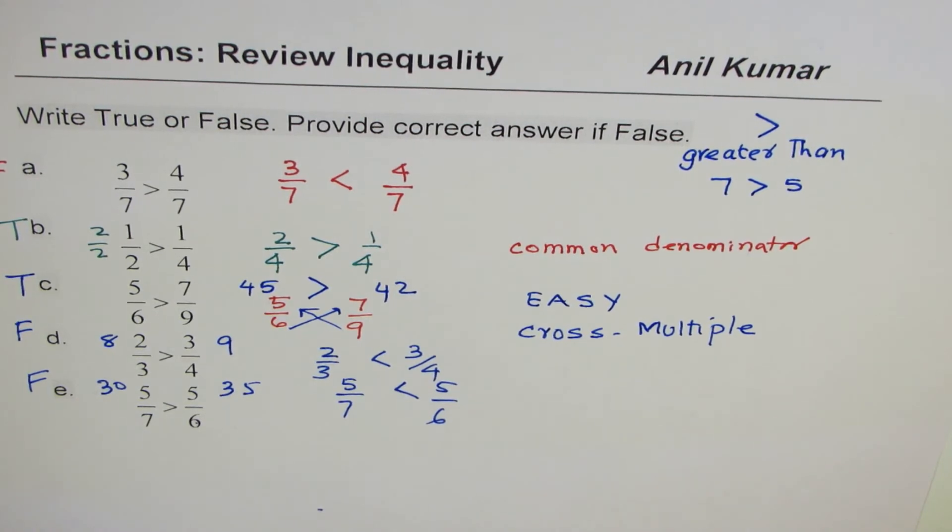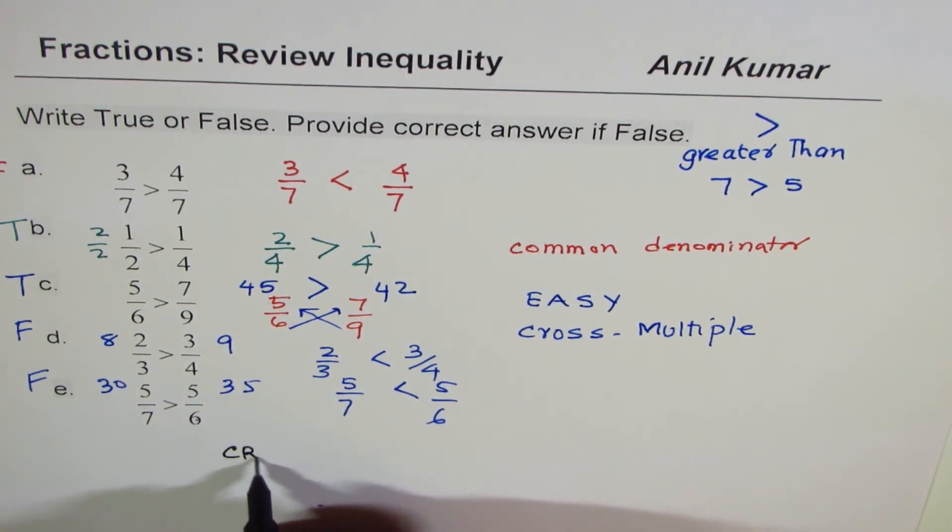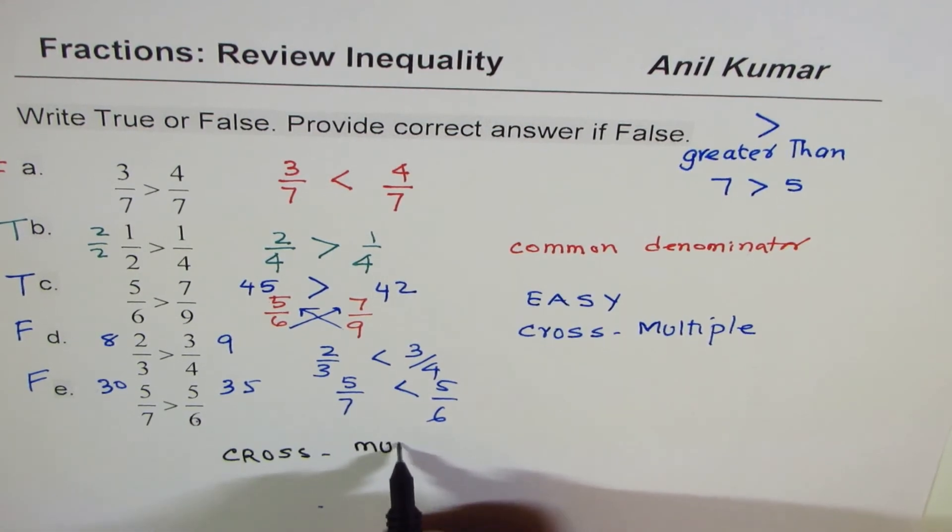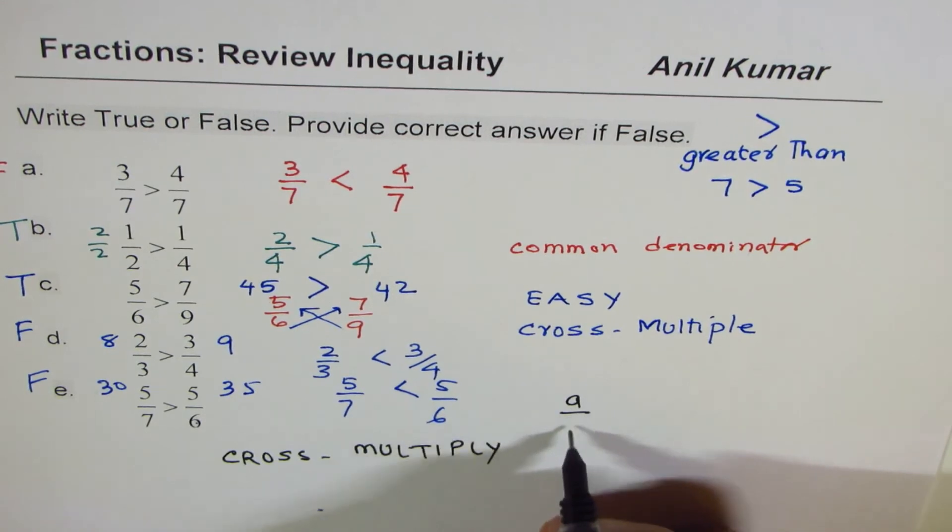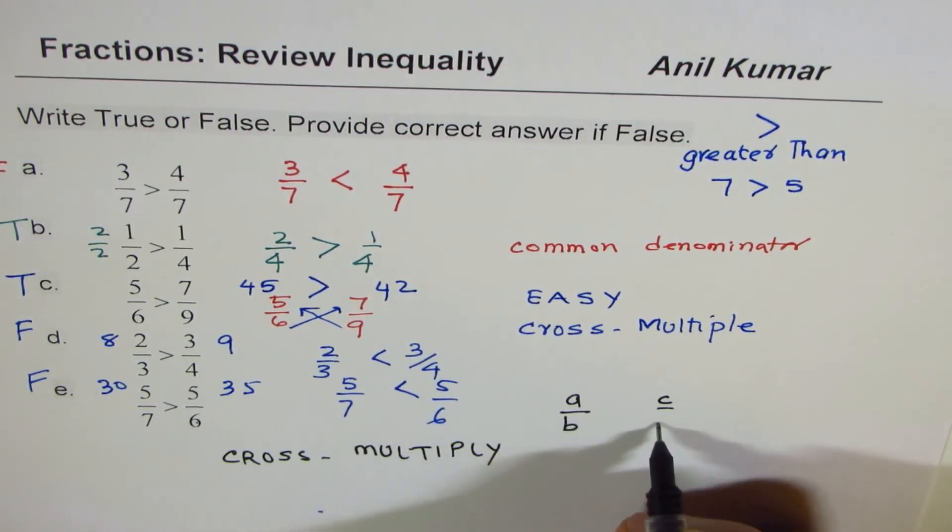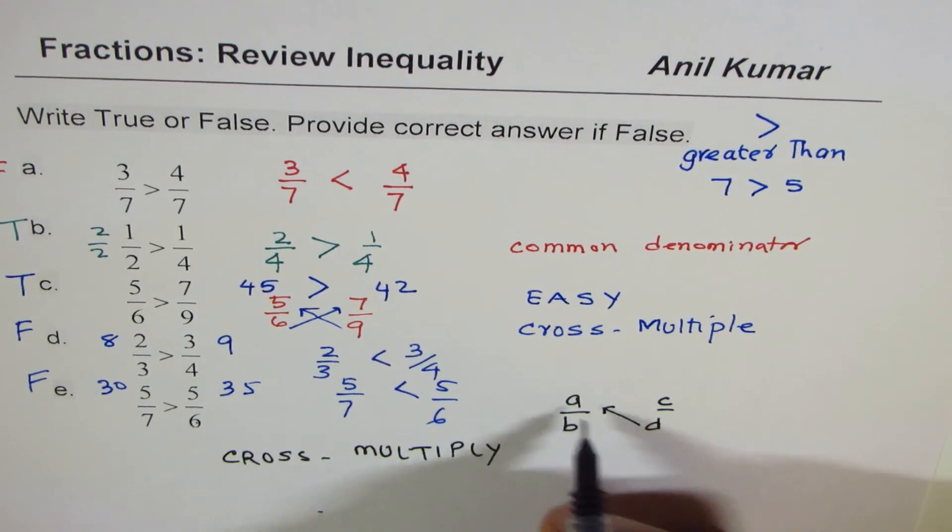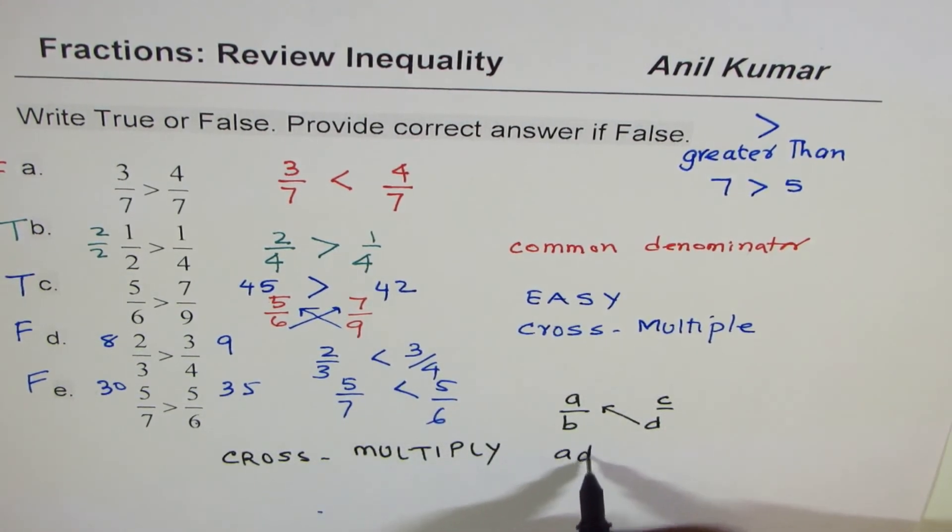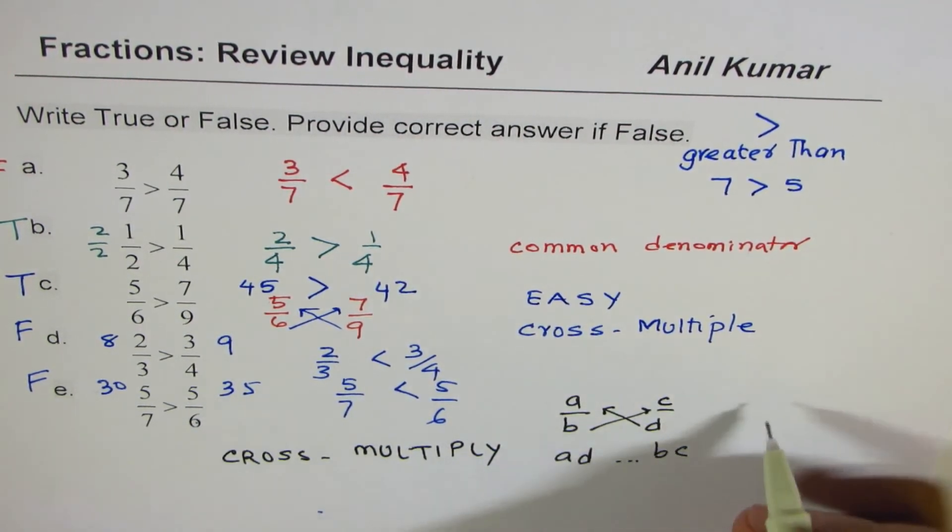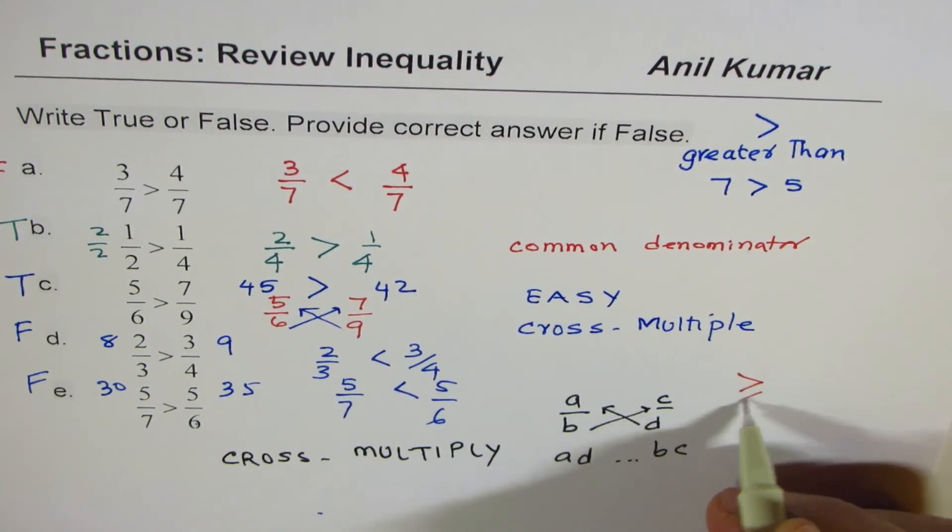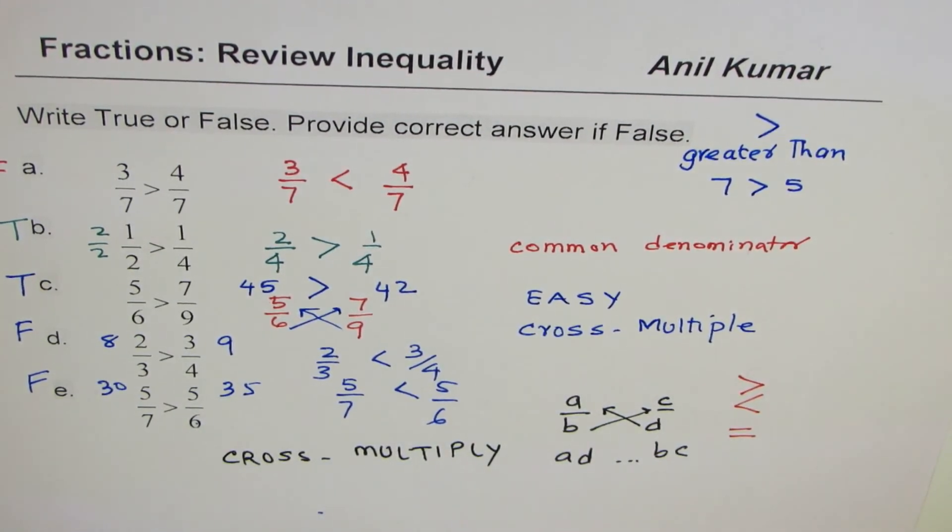So that is how you could answer such questions. Remember the great technique which you have learned here is cross multiply. So if you have any fraction a over b and c over d, we multiply a with d so you get ad, and then we multiply bc, and then you compare and write down your symbol. This symbol is for greater than, this is for less than, and that is for equal to. These are the three symbols which you might use in answering such questions.